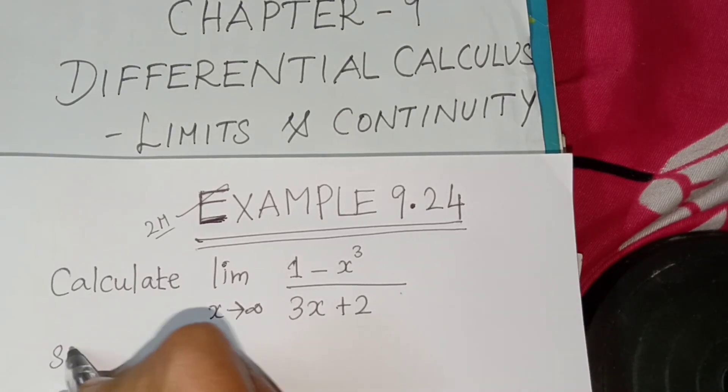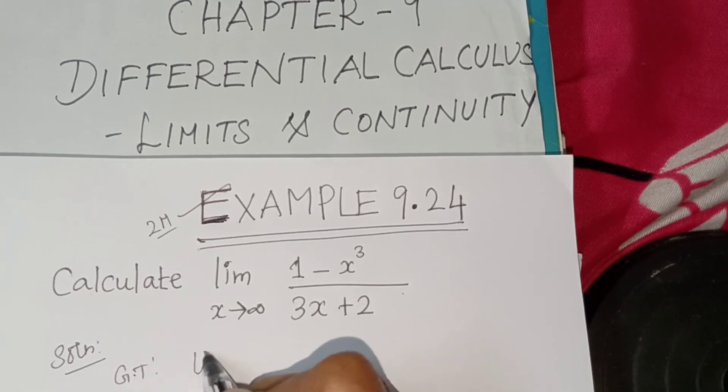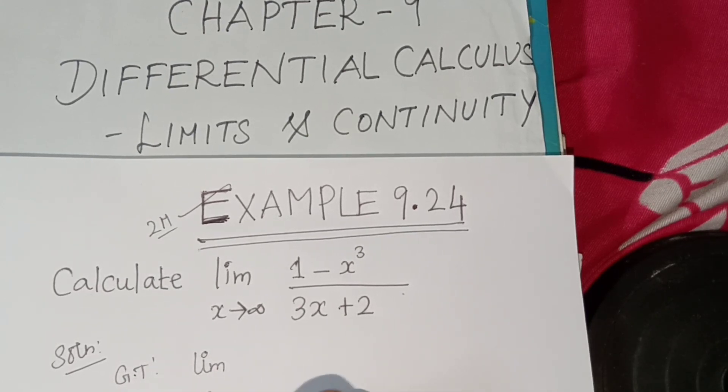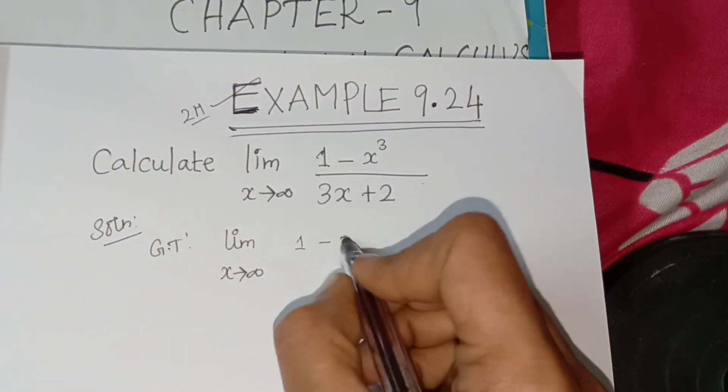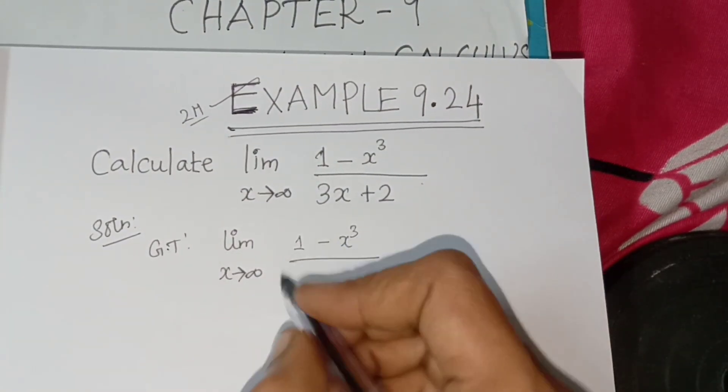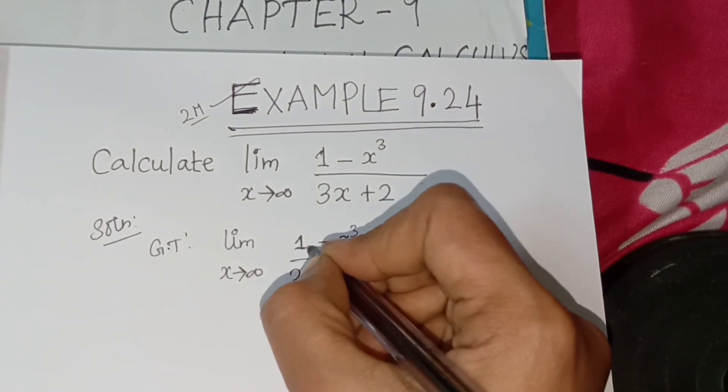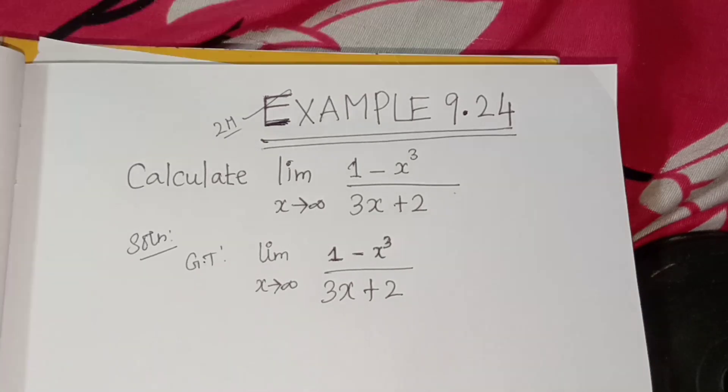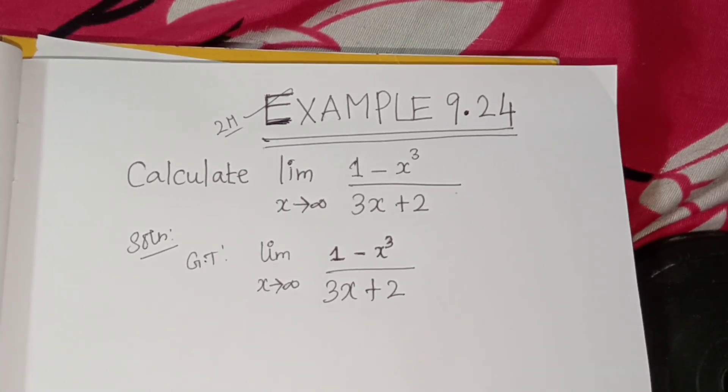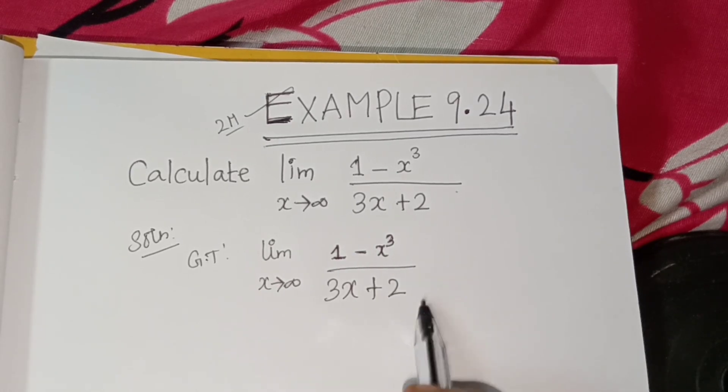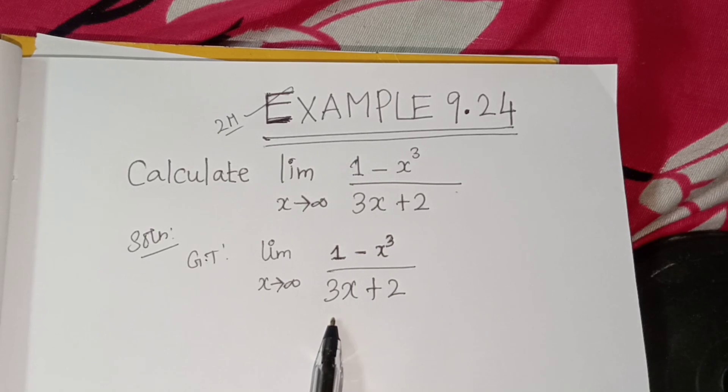Solution: given that limit x tends to infinity 1 minus x cube divided by 3x plus 2. Now the numerator and denominator compared to x cube in numerator and denominator is x.